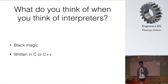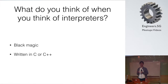What do you think of when you think of interpreters? You might think that they are black magic, very complicated pieces of software. If you look at the CPython source base, that might be true — the CPython source is about a few hundred thousand lines of C code and Python code. However, it's not difficult to write a simple, very basic interpreter.